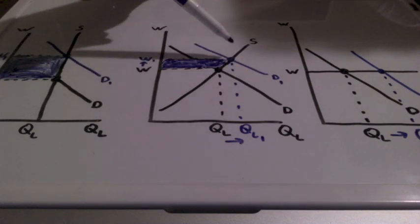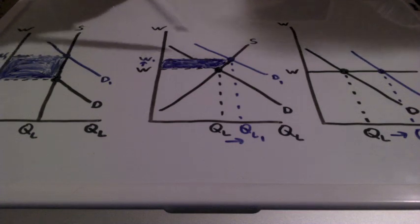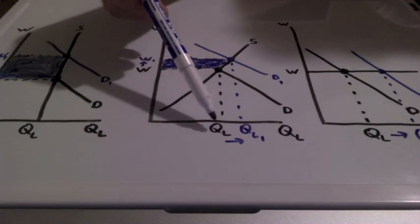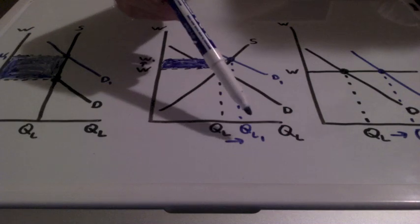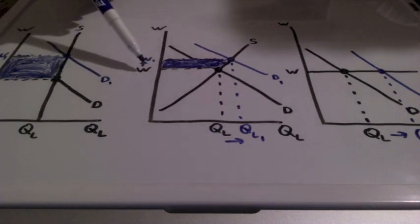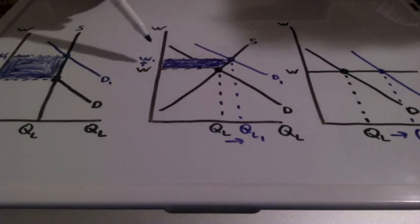If we demand more, or if a firm demands more of this particular kind of labor, our quantity would increase from QL to Q1 and our wages would also increase from W to W1.